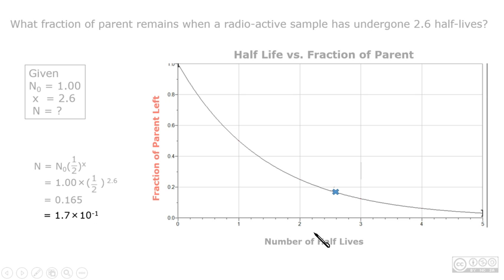The N value can also be found on the graph by finding the intersection between the X value of 2.6 and the curve, which is the blue sign on the graph where my mouse is pointing.